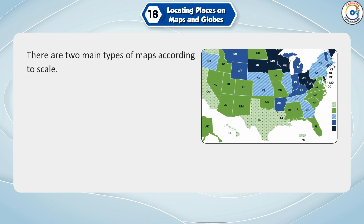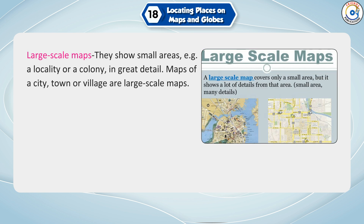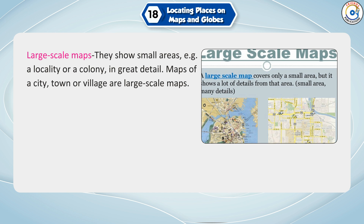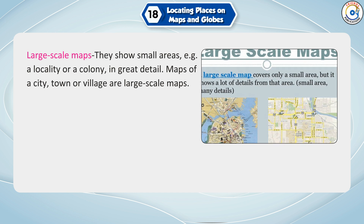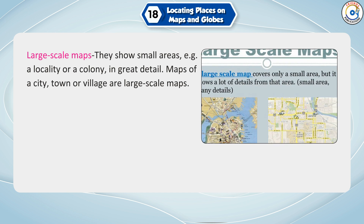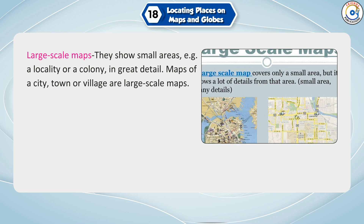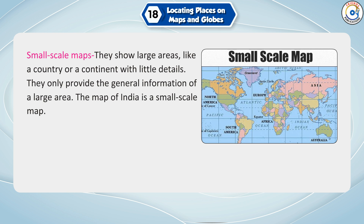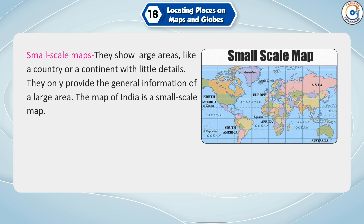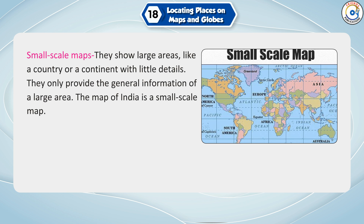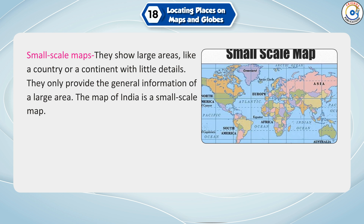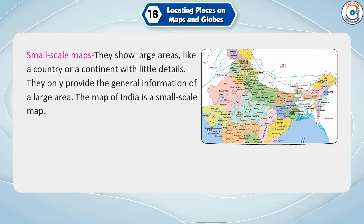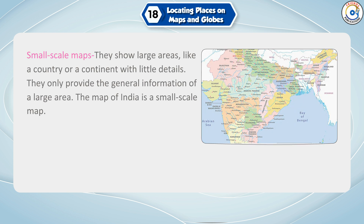There are two main types of maps according to scale. Large scale maps show small areas such as a locality or a colony in great detail — maps of a city, town or village are large scale maps. Small scale maps show large areas like a country or a continent with little detail, providing only general information. The map of India is a small scale map.